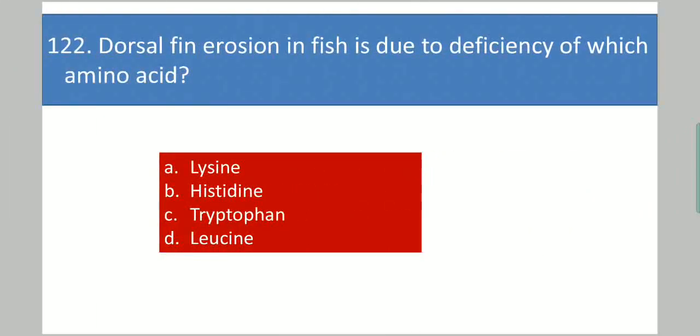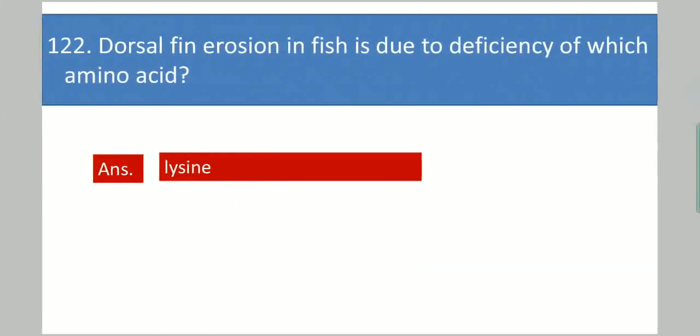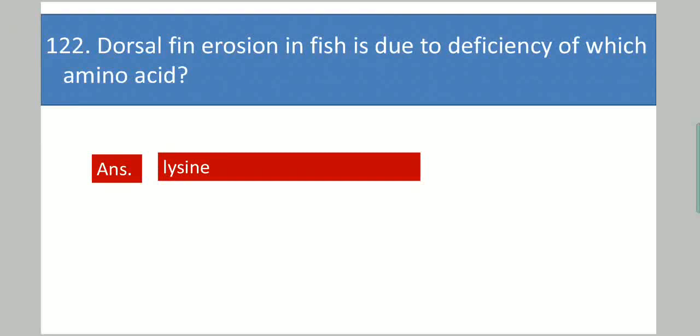Next question: Dorsal spine erosion in fish is due to deficiency of which amino acid? Your options are: lysine, histidine, tryptophan, leucine. Your answer is lysine.